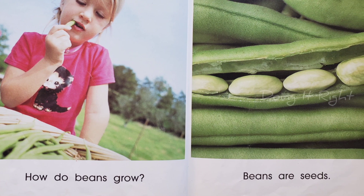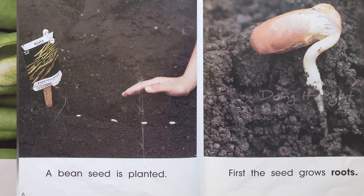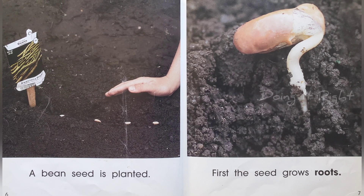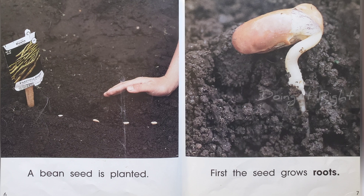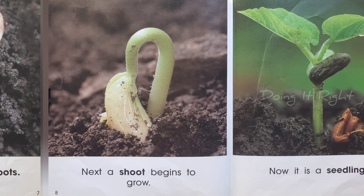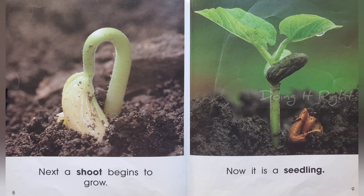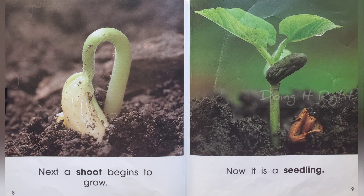How do beans grow? Beans are seeds. A bean seed is planted. First, the seed grows roots. Next, a shoot begins to grow. Now, it is a seedling.